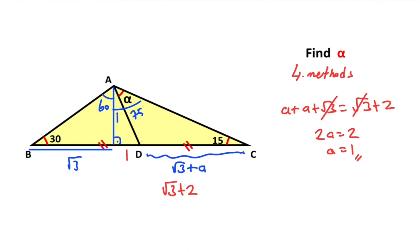So we get an isosceles right triangle — here is 45 degrees. That means alpha is going to be 30 degrees.